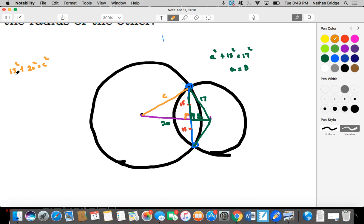Or, you can just think to yourself, hold on a second, 15, 20, that's like a 3, 4 triangle multiplied by a scale factor of 5.